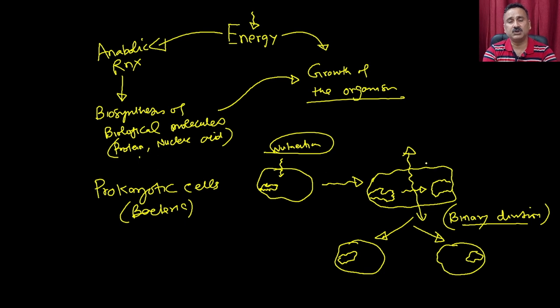For a eukaryotic cell, when you divide the cell to produce two cells, you must ensure equal or near-equal distribution of mitochondria, endoplasmic reticulum, Golgi bodies, and so on, so that both cells are sufficiently independent to run their own metabolisms. This requires a precise mechanism for cell division.